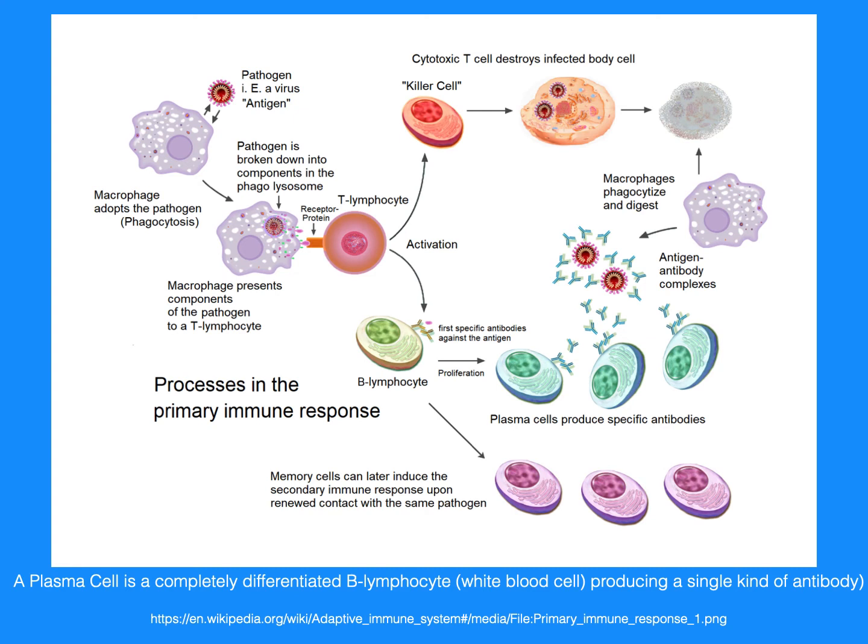In the primary immune response, a plasma cell is a completely differentiated B lymphocyte producing a single kind of antibody.